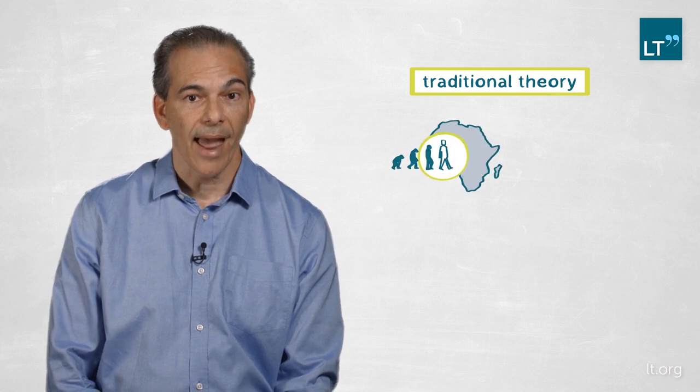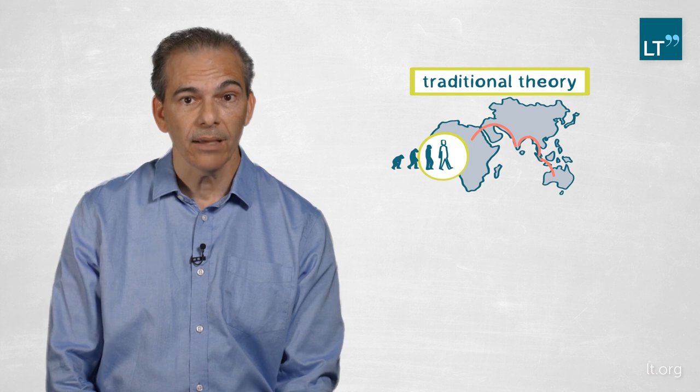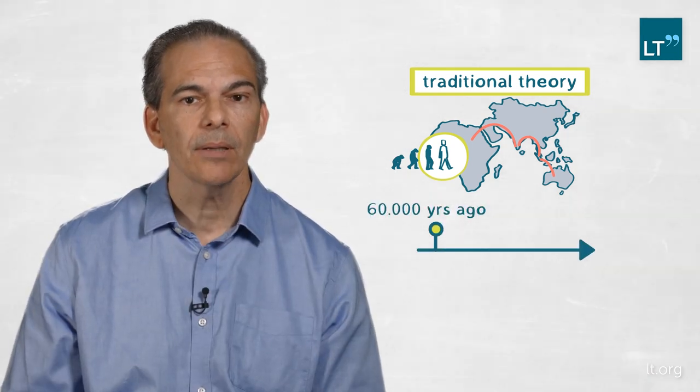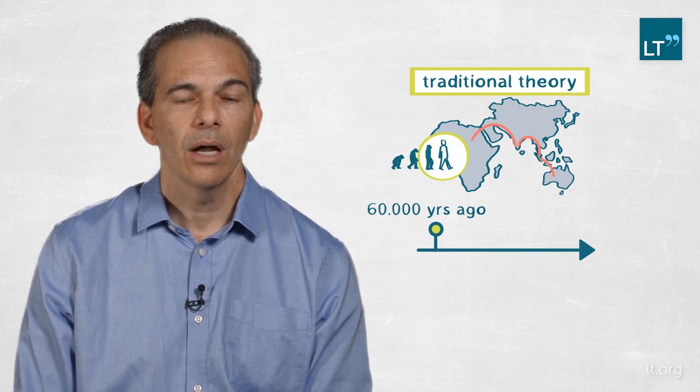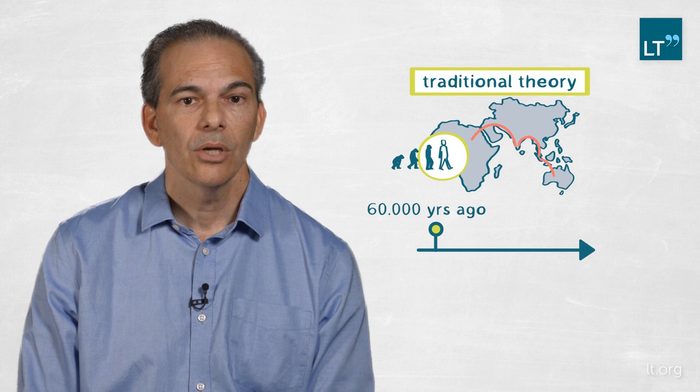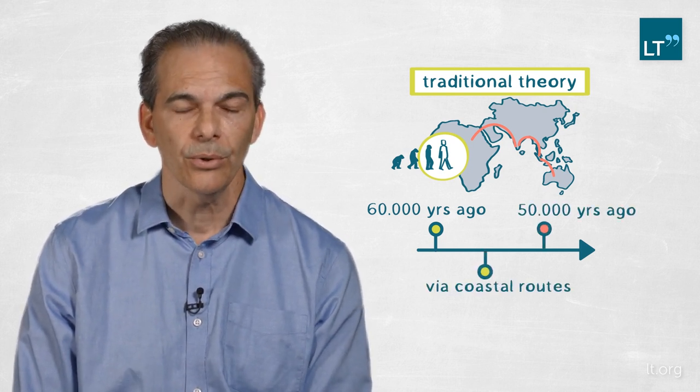The traditional theory has been that modern humans speciated in Africa and moved out in one wave around 60,000 years ago. They rapidly moved across Eurasia to reach Australia by around 50,000 years ago employing coastal routes.